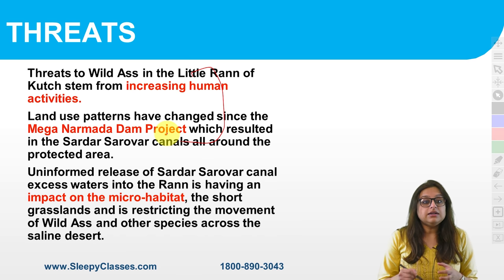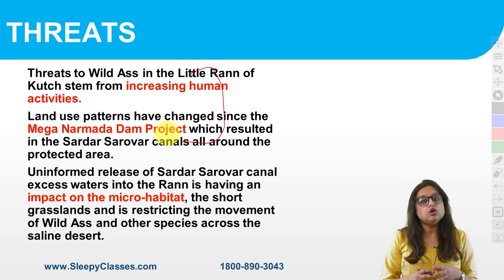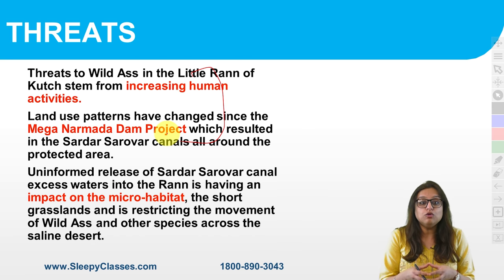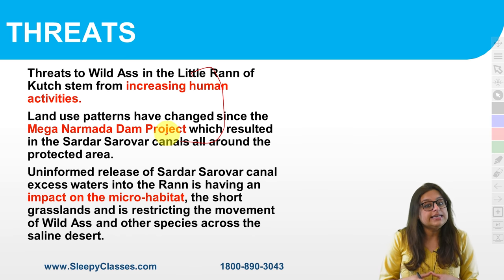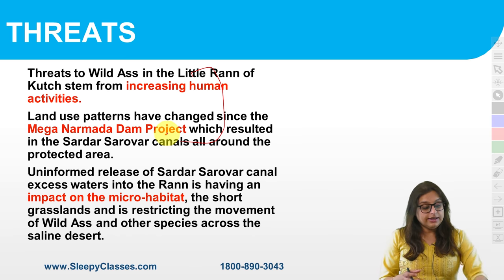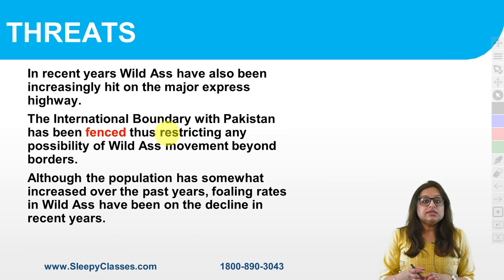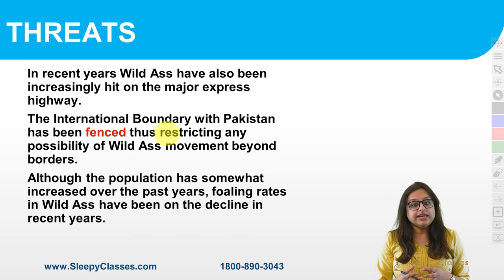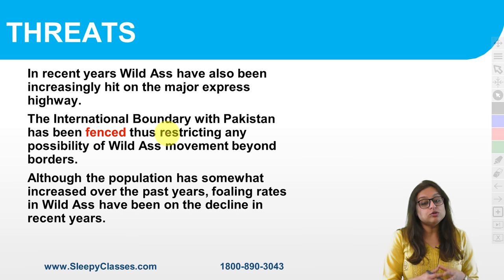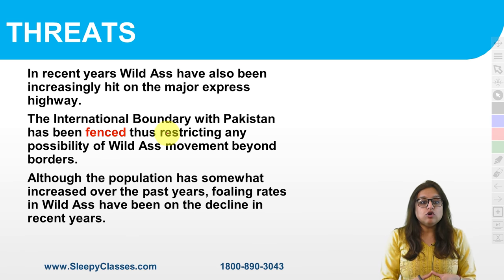Beyond that, the Narmada Dam project has actually resulted in a lot of canals, because of which the habitat is disrupted and movement is disrupted — which has also resulted in decreasing numbers of Indian Wild Ass. Additionally, major express highways have been built, restricting their movement. The boundary with Pakistan has also been fenced, further restricting their movement.